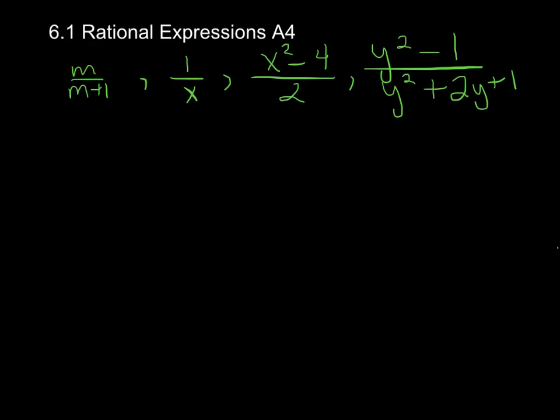Here we've got an M there, so that's a variable, we've got M plus 1 in the denominator, that's a rational expression. Another example is 1 over x, so you've got x in the denominator here.